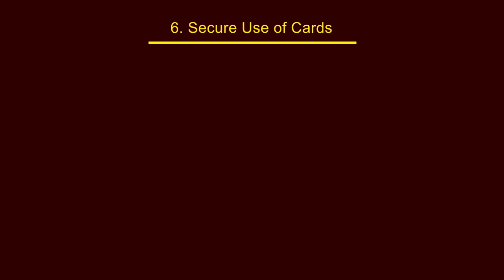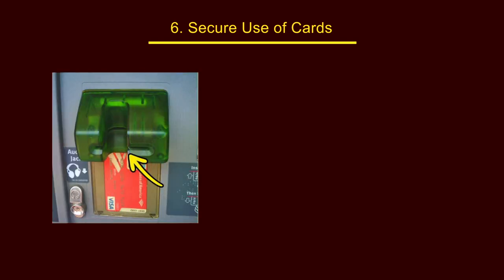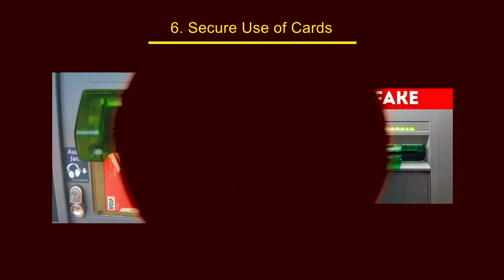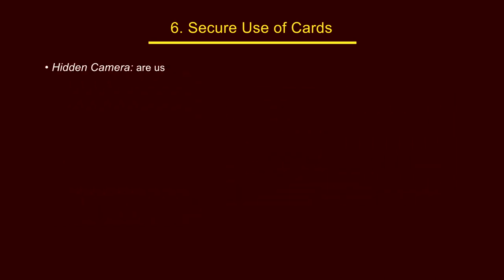You can identify a skimmer by observing the ATM card slot. In a real card slot only the slot is visible, but with a fake card slot an additional skimmer is attached and the shape of the slot looks different. If you observe something unusual at the ATM card slot, try to pull that device — if it is a skimmer, it will come out.